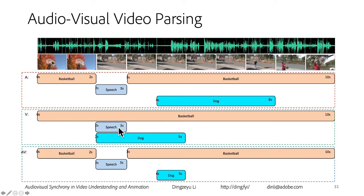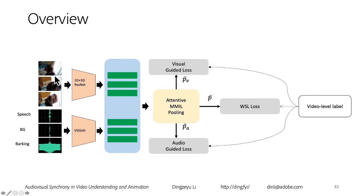The overview of our pipeline: we take the video frames and audio frames and feed them into pre-trained networks. This part is a hybrid attention network that I will talk about shortly. After that, we get a second-level prediction — suppose it's three seconds, we'll have three predictions for each second. For the audio branch, maybe only the third frame has a barking event, so the third one will indicate barking.